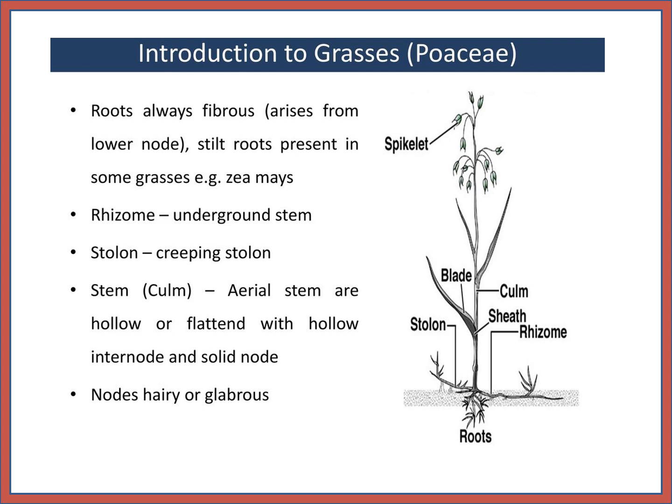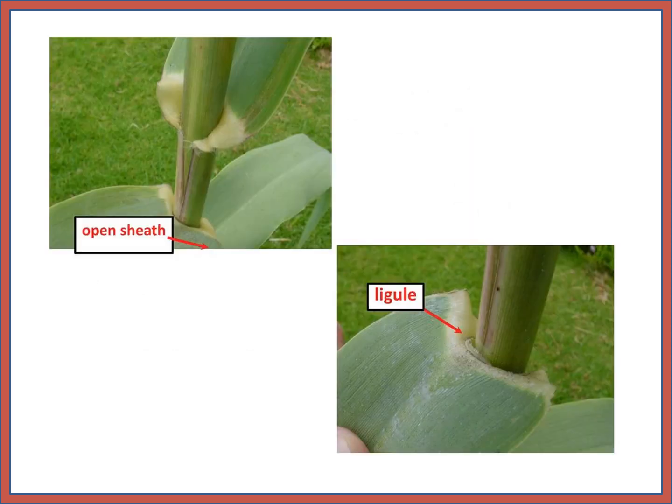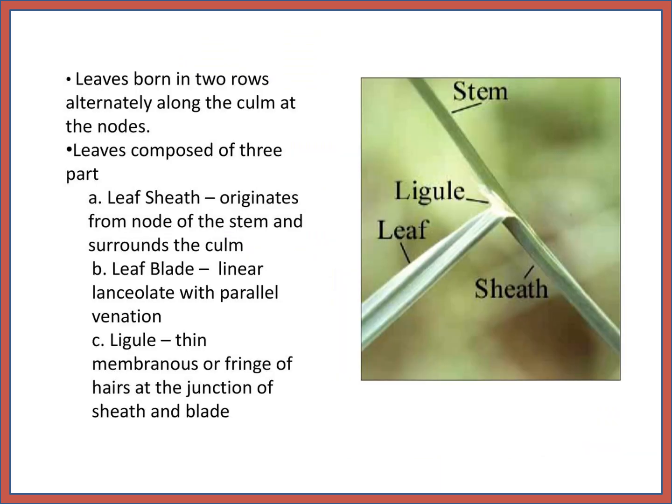Nodes are hairy or glabrous. You can observe the spikelet also. Open sheath — this is the ligule. You can observe stem, ligule, leaf, and sheath. The leaf sheath originates from the node of the stem and surrounds the culm. Leaf blade is linear-lanceolate with parallel venation.